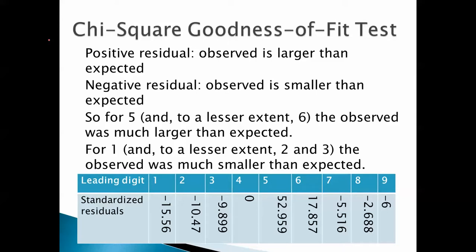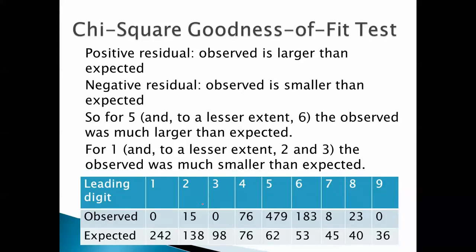A positive residual indicates that the observed is larger than expected. A negative residual means the observed is smaller than expected. So for 5, and to some extent 6, the observed is much larger than expected. For 1, and to a lesser extent 2 and 3, the observed was much smaller than expected. And that fits when you look at these.